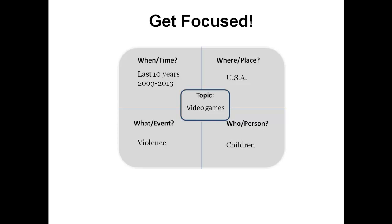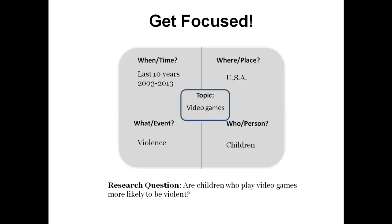By responding to the four W's and focusing on what aspects of this topic you would like to research, you can form your research question. A good research question in this case would be: are children who play video games more likely to be violent? Keep in mind that not all the four W's need to be represented in your research question. Using our example, the when and where categories would help you focus your search, but are not necessarily central to the research question.